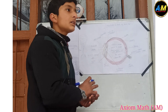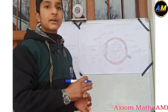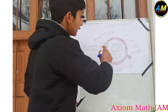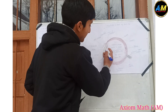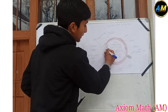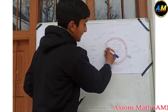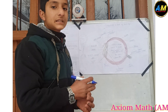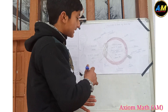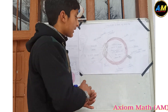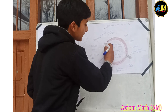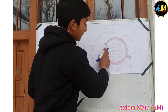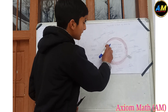The iris is the ring-shaped membrane of the eye. It increases and decreases the size of the pupil, controlling how much light enters the eye.